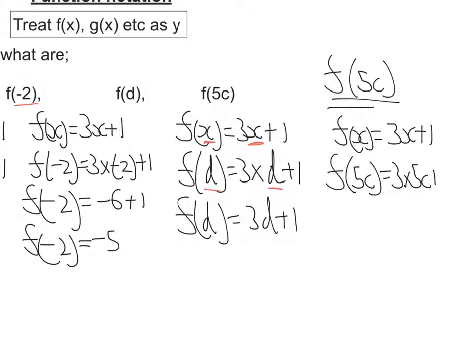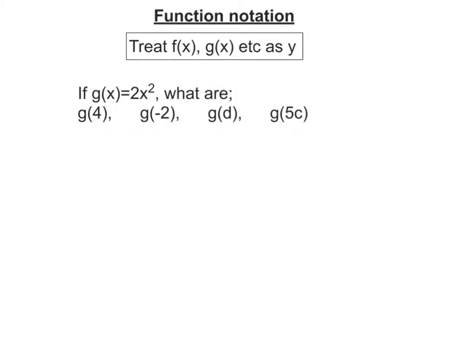3 times 5c plus 1. So f of 5c, well 3 times 5c is 15c. And I add 1. So there is my answer.